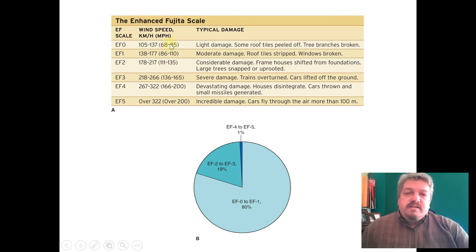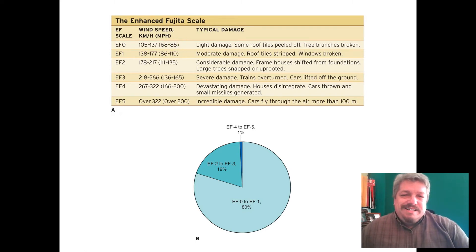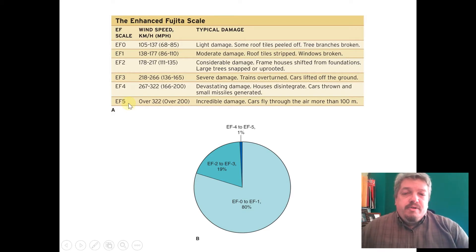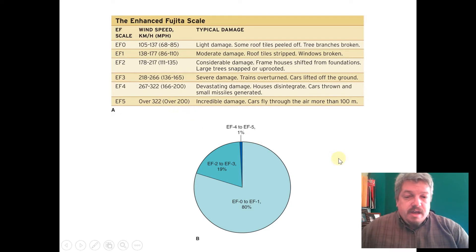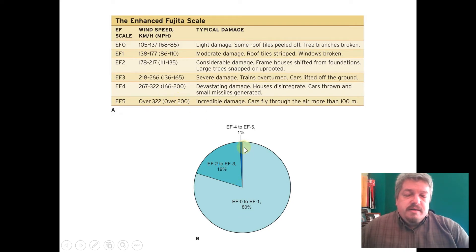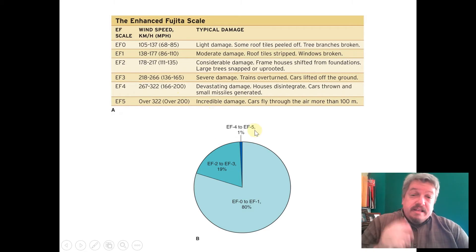The rankings go from EF0 to EF5. The lowest ones do very little damage — maybe break a few branches — with winds of only 68 to 85 miles an hour, which is actually the same speed as a hurricane. All the way up to EF5, where winds are over 200 miles an hour and cars fly through the air 100 meters — the length of a football field. The vast majority of tornadoes, about 80%, are EF0 or EF1, with mild to moderate damage. About 20% are pretty strong, and the two strongest categories account for about 1%. On average, only one EF5 per year occurs in the United States.